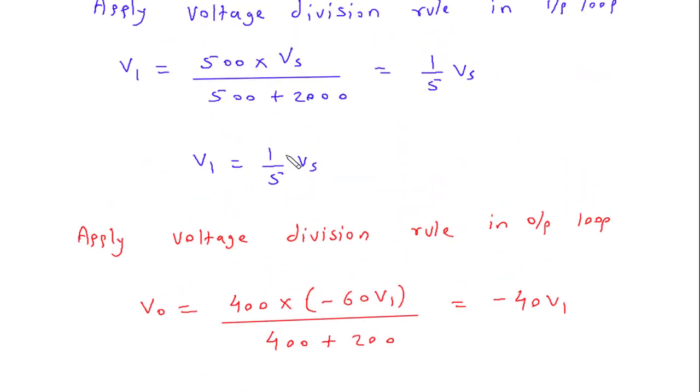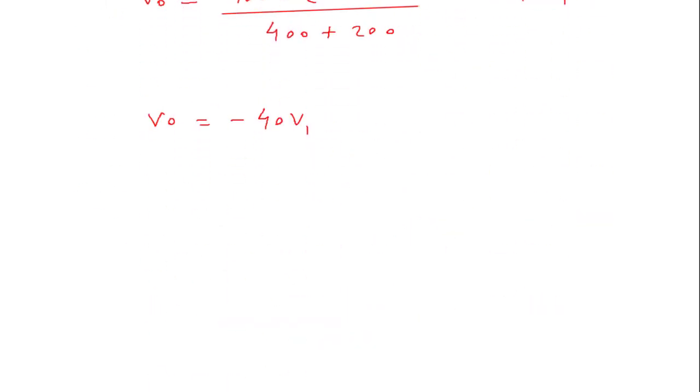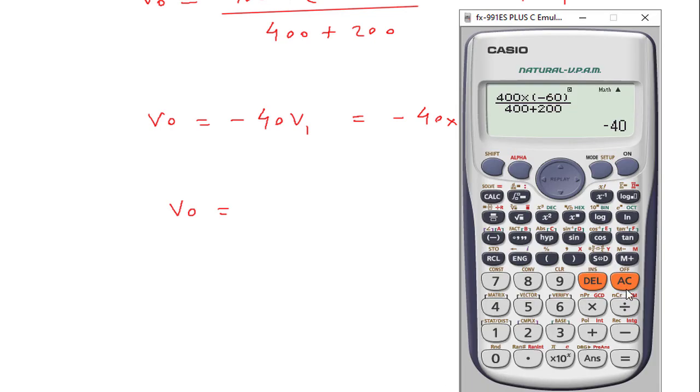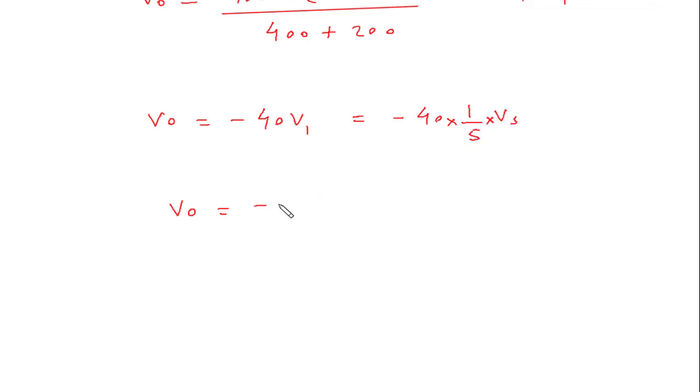But V1 is equal to 1 by 5 Vs. So this will be Vo is equal to minus 40 by 5 is minus 8. So Vo is equal to minus 8 Vs.